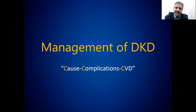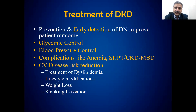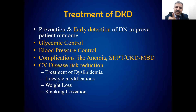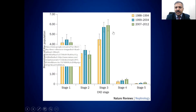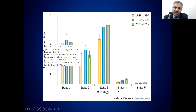Whenever you manage any patient with chronic kidney disease or diabetic kidney disease, you need to treat the underlying cause, treat the complications resulting from kidney disease, and risk-stratify for cardiovascular disease. For diabetic patients, do early detection of kidney disease, maintain good glycemic control and blood pressure control, treat complications like anemia, and decrease cardiovascular risk — the number one cause of death. Treat dyslipidemia with statins, encourage lifestyle modification, weight loss, and smoking cessation. Many patients with stage 3 CKD die of heart disease before reaching stage 4.